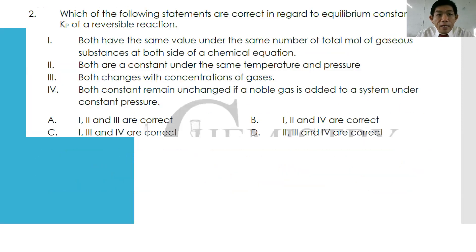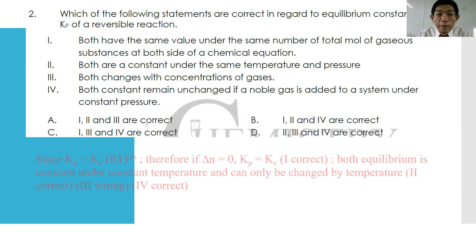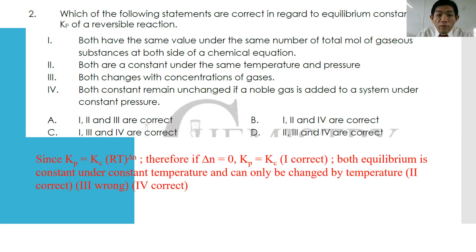For question number two: which of the following statements are correct regarding the equilibrium constants Kc and Kp for a reversible reaction? Statement one: both values are the same under the same total number of gas moles at both sides of the equilibrium. Using the expression Kp = Kc × (RT)^Δn, if Δn = 0, then Kp = Kc. Statement two: both are constant under the same temperature and pressure — also true. Both can only change when there is a change in temperature.